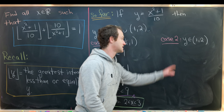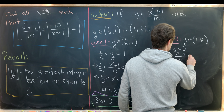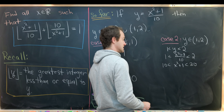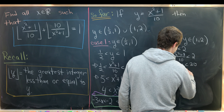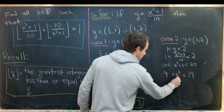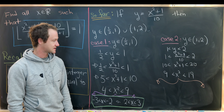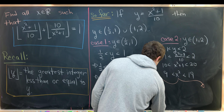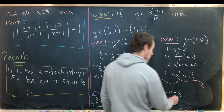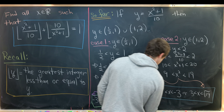When y is between 1 and 2, that means (x² + 1)/10 is between 1 and 2, so x² + 1 is between 10 and 20, meaning x² is between 9 and 19. Taking square roots and considering both positive and negative x, we get either x is between negative sqrt(19) and negative 3, or x is between 3 and sqrt(19).